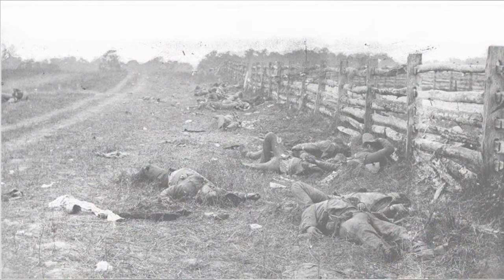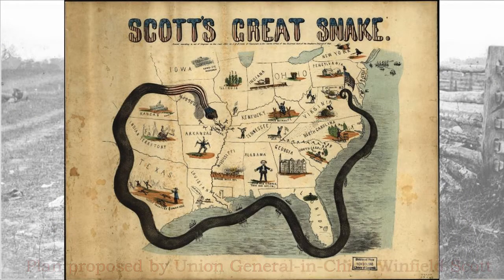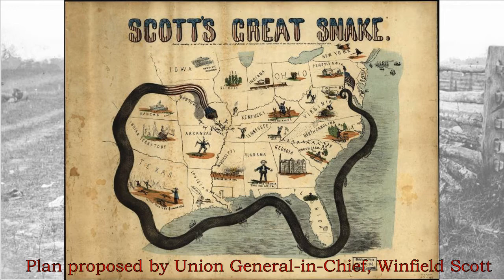The Union formed a battle strategy called the Anaconda Plan. It involved two big elements: first, a naval blockade where they used their considerably stronger navy to strangle all southern ports and prevent any supply and trade. The second element was deploying active ground troops to fight battles, take key southern cities and strategic places, and destroy any Confederate army forces. The Anaconda Plan was designed to squeeze the South like a snake.